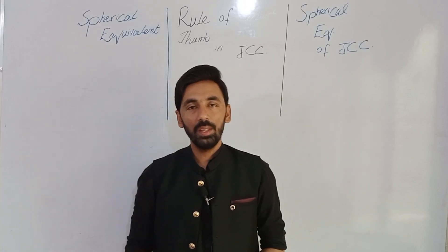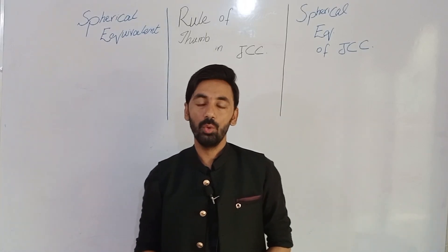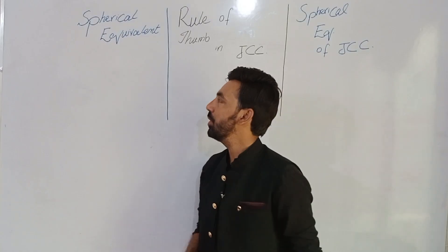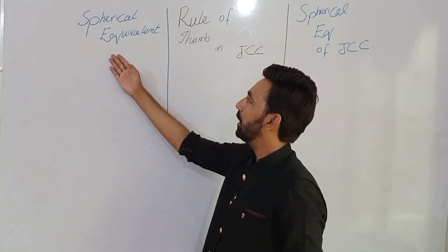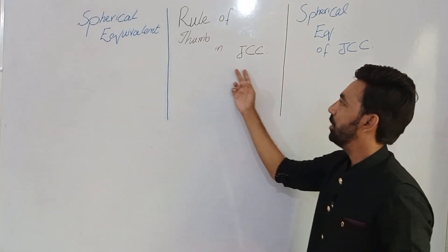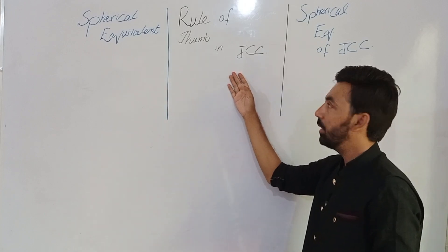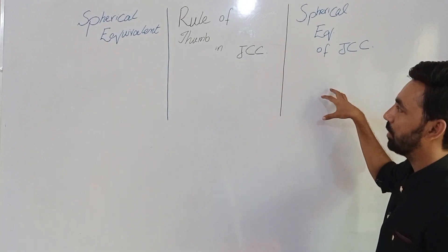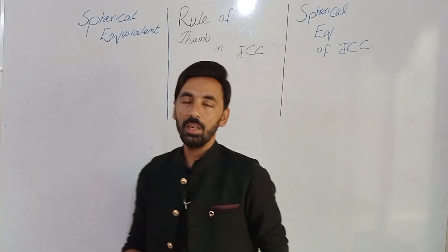Good morning. I received a comment from Miss Zupeda Malik — you can see her comment — and she is confused about three terminologies: spherical equivalent in normal prescription, rule of thumb in JCC which is the last step of the Jackson Cross Cylinder, and the spherical equivalent of the Jackson Cross Cylinder.